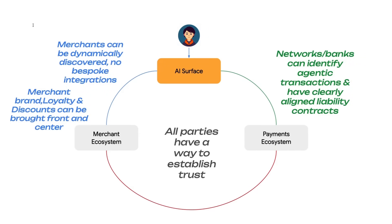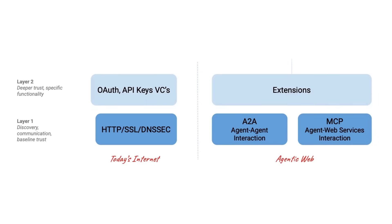Google is definitely approaching this taking into account both the merchant ecosystem and the payments ecosystem. They're focused on building this so merchants can still interact with your agent — displaying offers, suggesting loyalty programs for extra discounts. But they also want to make sure on the payment side that the identity of your agent is going to be tied to you. They're making A2P an extension on top of both the A2A protocol and the MCP protocol, with the goal of establishing trust between your agent and merchants, and making it 100% clear that the intent of the user is being expressed by the actual agent.